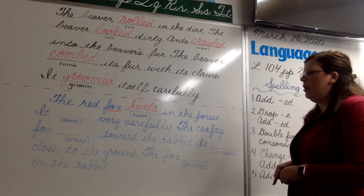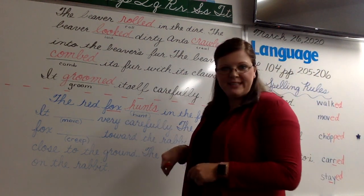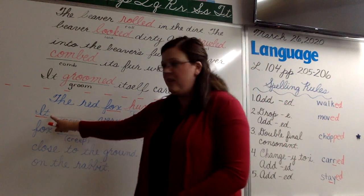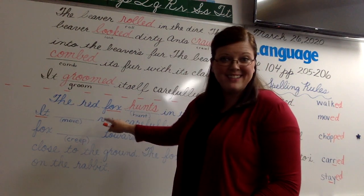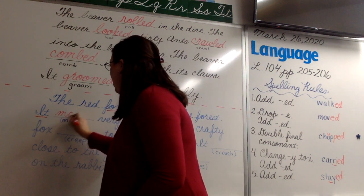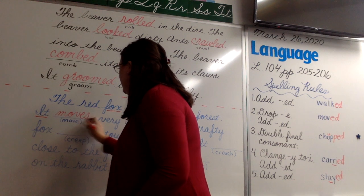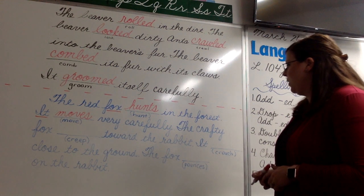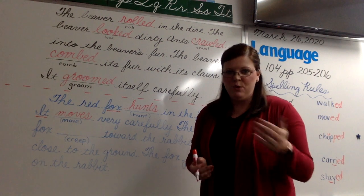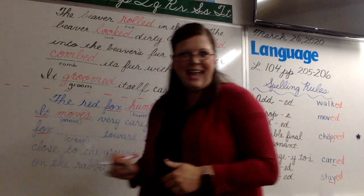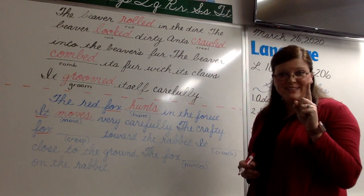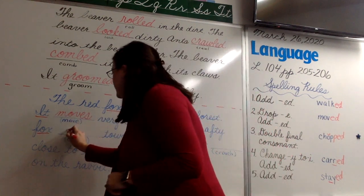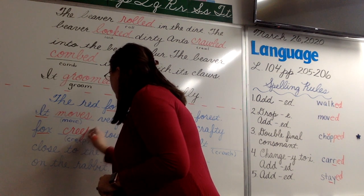It blank very carefully. Who or what is that sentence about? It. It is singular — singular means one. No S there, so we put the S on the verb: M-O-V-E-S. It moves very carefully. The crafty fox blank toward the rabbit. If you answered fox, good job. Fox is our subject — it's singular, no S there, so we need an S on the verb: C-R-E-E-P-S.